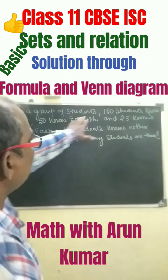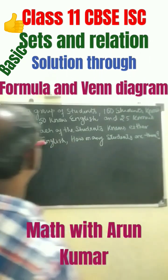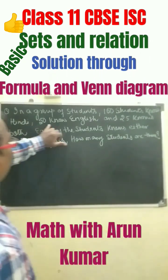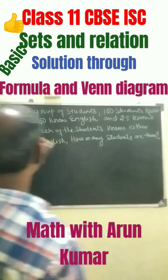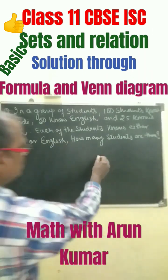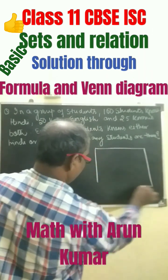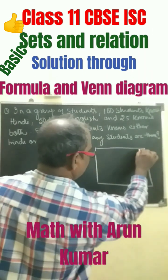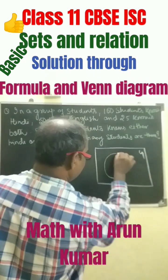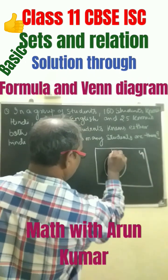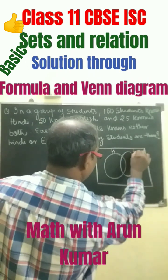In a group of students, 100 students know Hindi, 50 know English, and 25 know both. Let us go with the Venn diagram. Suppose this is a Venn diagram here — this is a universal set, this is Hindi, and this is English.